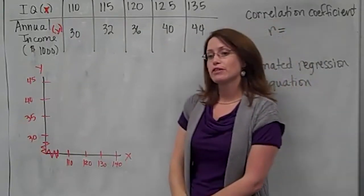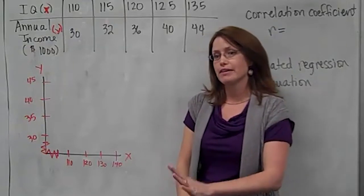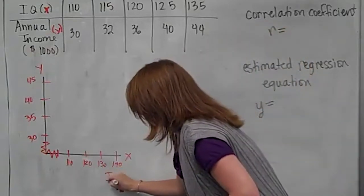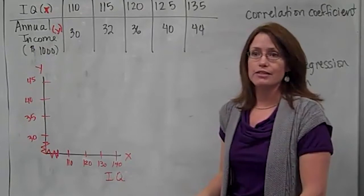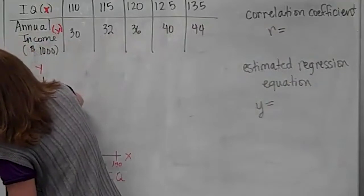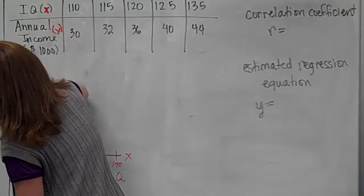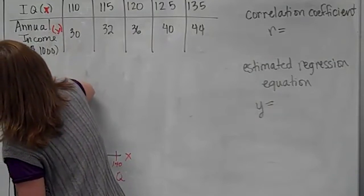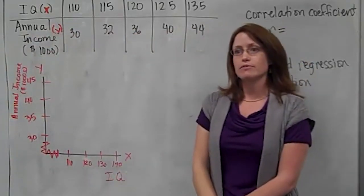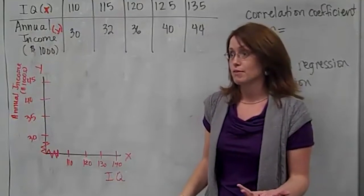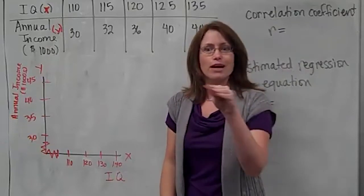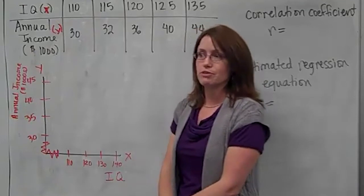I'm going to do the same thing for annual income. I want to make sure I have it as low as 30 and as high as 44. I'm going to pick some scale, whatever I want to use. I'll put another break in the graph and then just start drawing it and labeling it. Maybe 30, I'll do a scale of 5: 35, 40, 45. So I have my x-axis and my y-axis. You need to label it.